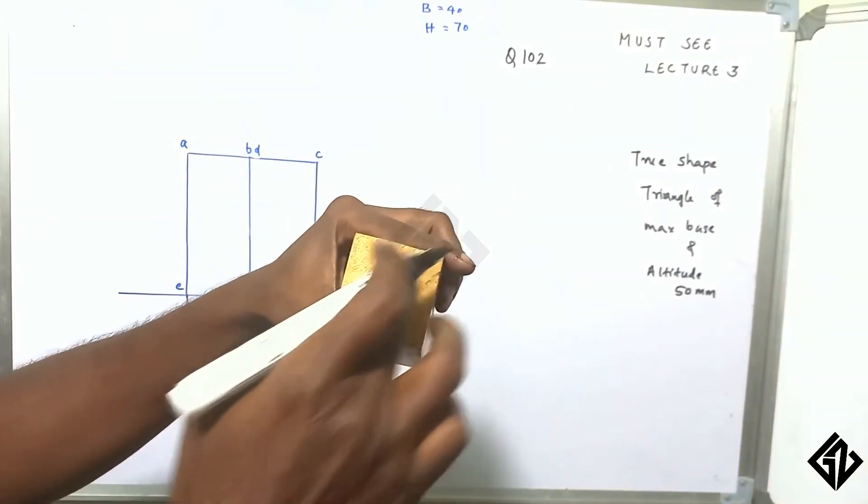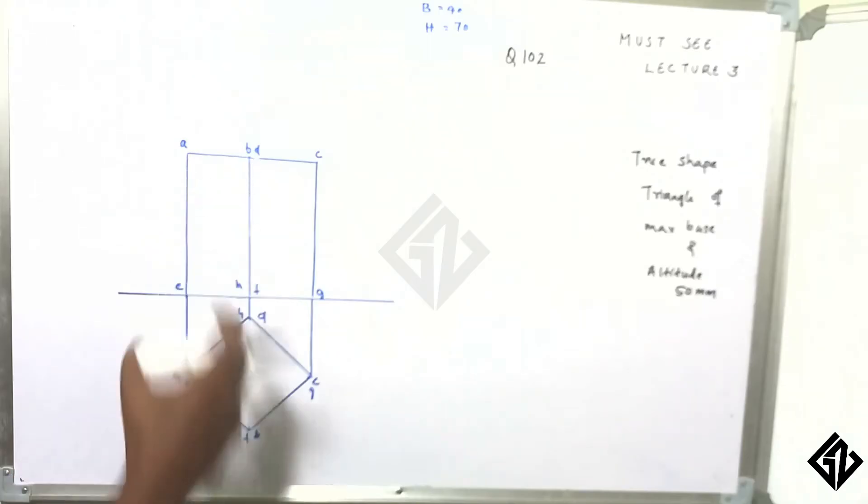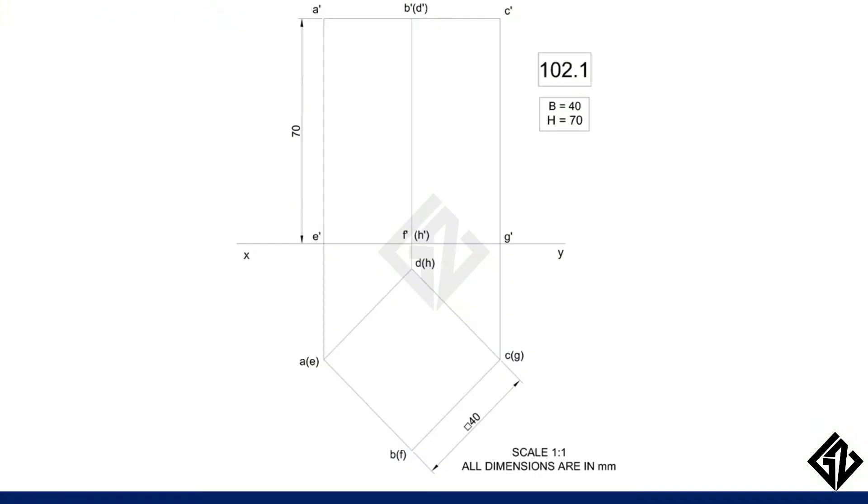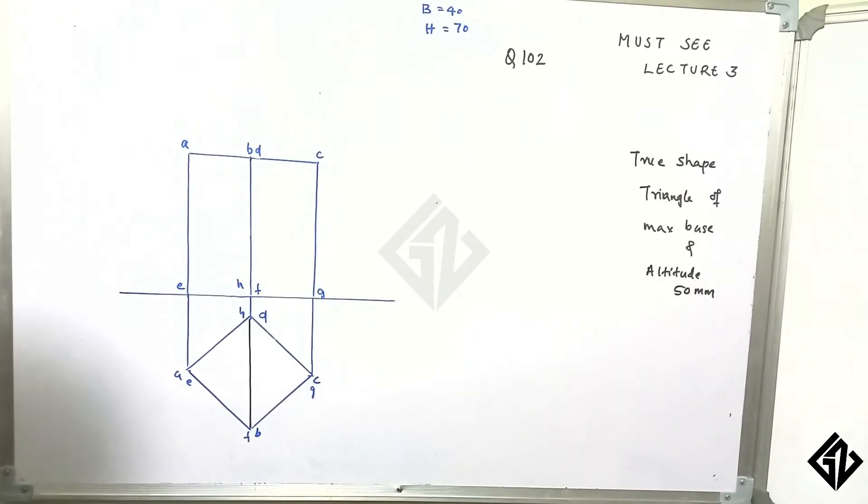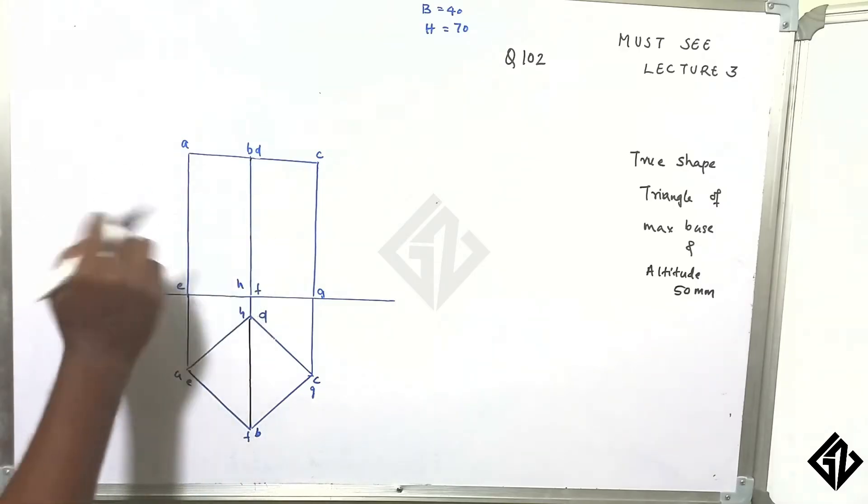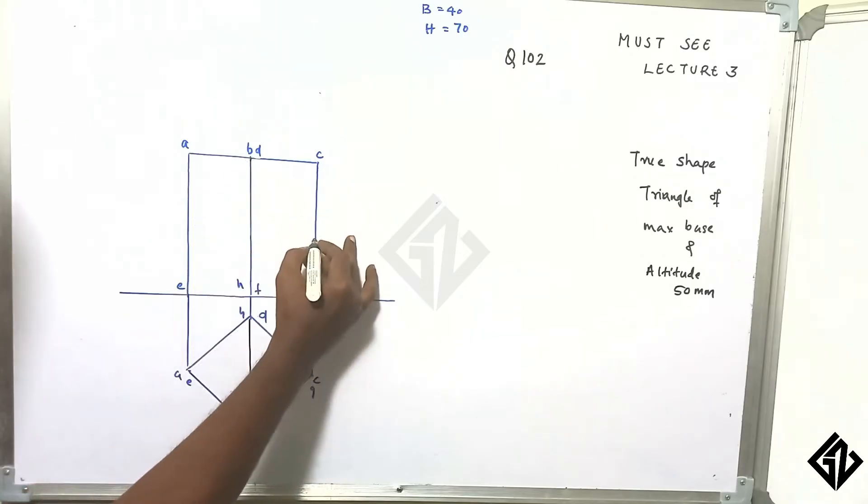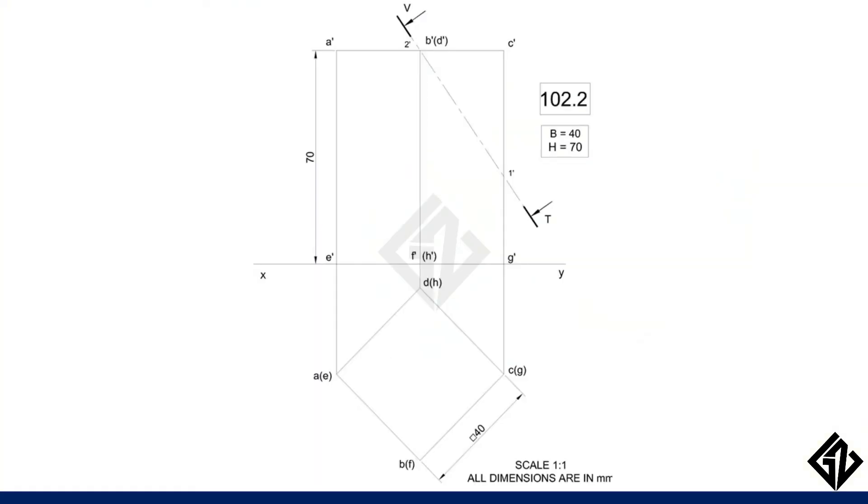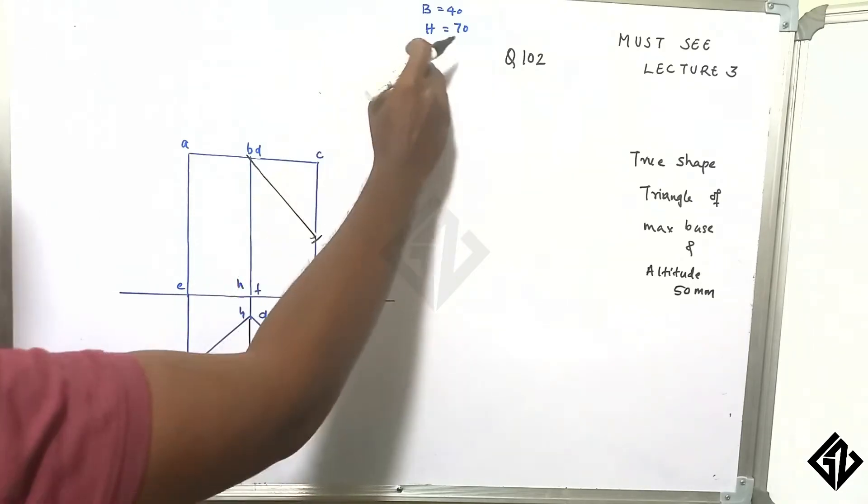Now this is maximum. Here is the triangle, here is the maximum base. Then this point is 50. We make the axis at 50. We have to remove the portion here, we will remove the portion there.